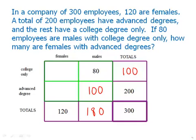We'll now look across the advanced degree category. We have blank plus 100 equals 200. So clearly, this has to be 100 also. There must be 100 females with advanced degrees. That's the answer for which we're looking.